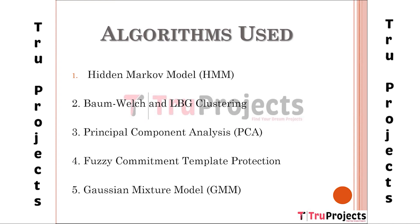The next algorithm is Baum-Welch and LBG clustering. These techniques are used with the HMM algorithm to refine the model's parameters and improve the accuracy of feature extraction from the biometric templates. Next is Principal Component Analysis. PCA is used for feature selection, reducing the dimensionality of extracted features while retaining their most relevant information, which aids in optimizing the storage and processing of biometric data.